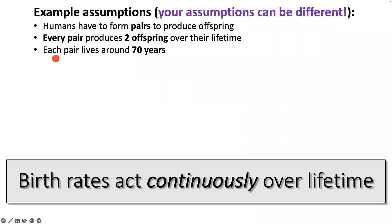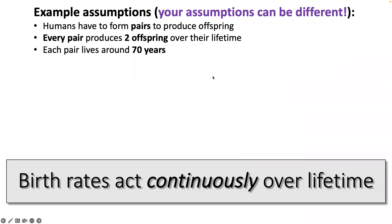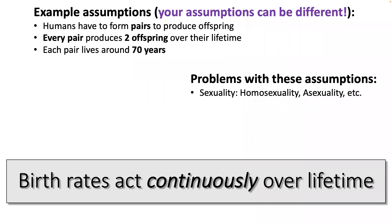Our assumptions: humans have to form pairs to produce offspring — not asexually reproducing bacteria. Every pair of humans produces two offspring over their lifetime on average. Every pair lives around 70 years. There are problems with these assumptions — the pairs that form aren't necessarily child-producing pairs, not all people are of child-rearing age, and there are demographic differences in offspring production and lifetime — but we start with something.